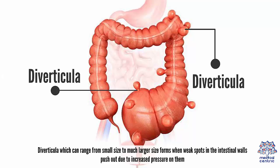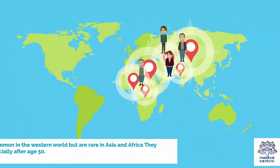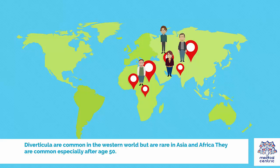Diverticula, which can range from small size to much larger size, forms when weak spots in the intestinal walls push out due to increased pressure on them. Diverticula themselves are harmless if they are not infected or inflamed. They typically cause no symptoms and don't need treatment. Diverticula are common in the Western world but are rare in Asia and Africa, and they are common especially after age 50.